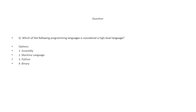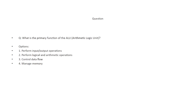Which of the following programming languages is considered a high-level programming language? The options are: assembly language, machine language, Python, and binary. The correct answer is Python — Python is a high-level programming language, which means it is user-friendly and abstracted from machine code.